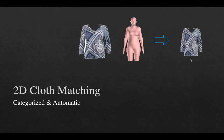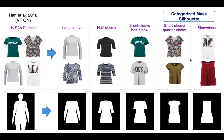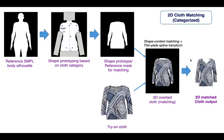The second part of our method is 2D clothing matching. We explore two approaches: categorized and automatic, for warping the target cloth according to the standard A-posed reference SMPL model. For the categorized matching, we divide the Vuitton test dataset cloths into 5 categories: long sleeve, half sleeve, short sleeve half elbow, short sleeve quarter elbow, and sleeveless. We make corresponding mask silhouettes from the reference SMPL model for these 5 categories, then apply the combination of shape context matching and thin plate spline transformation to get the 2D matched cloths based on each category.